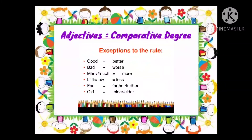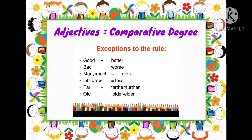There are some exceptions to these rules. For example: the adjective 'good' becomes 'better' in comparative degree. 'Bad' becomes 'worse'. 'Many' or 'much' becomes 'more'. 'Little' or 'few' becomes 'less'. 'Far' becomes 'farther' or 'further'. 'Old' becomes 'older' or 'elder'. These are some exceptions of comparative degree which you must remember.